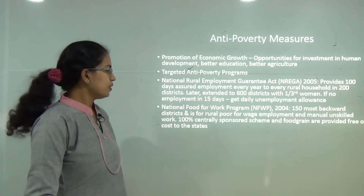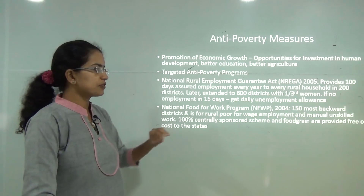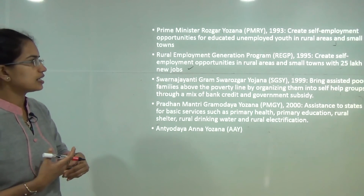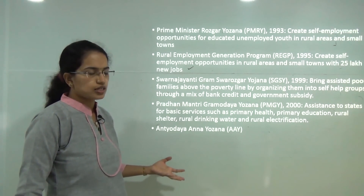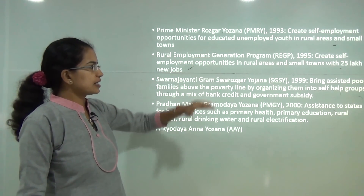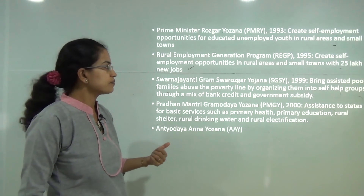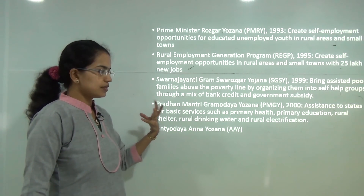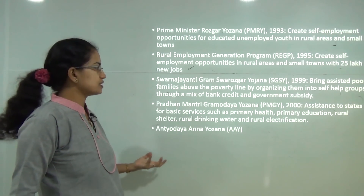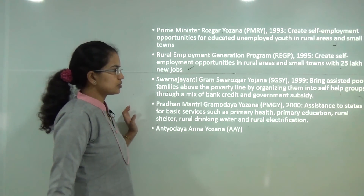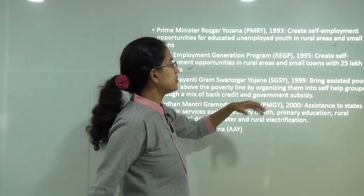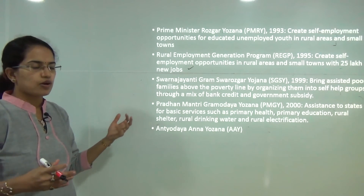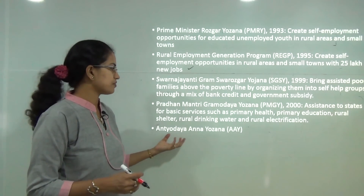The National Food for Work Program addresses the 150 most backward districts, providing food in lieu of work done, and is 100% centrally sponsored. Pradhan Mantri Rozgar Yojana (1993) aimed at creating self-employment for unemployed youth. The Rural Employment Guarantee Program (1995) also aimed at self-employment. The Swarnajayanti Gram Swarozgar Yojana (1999) helped poor people rise above the poverty line through a mix of bank credit and government subsidies.